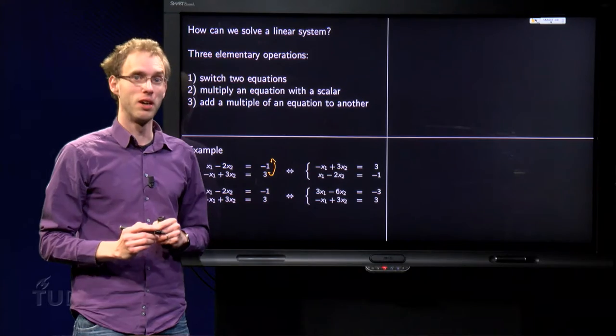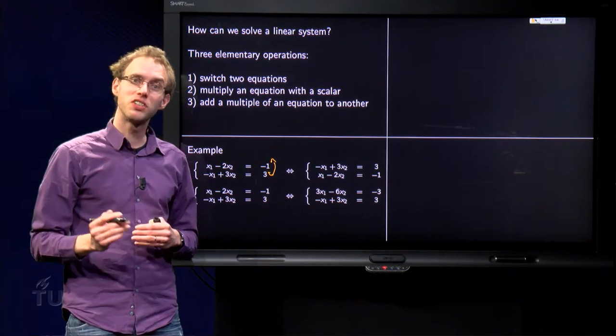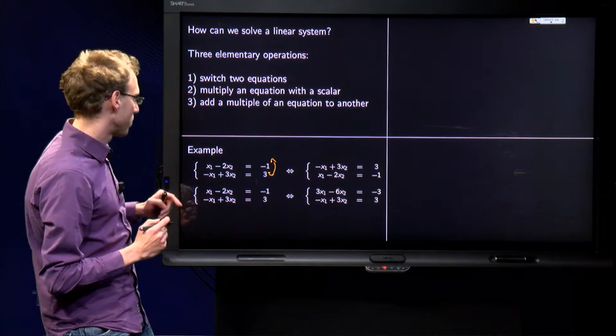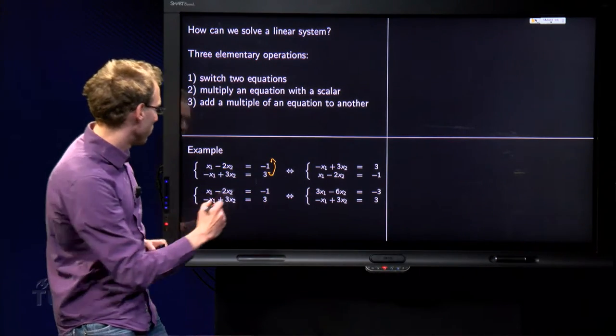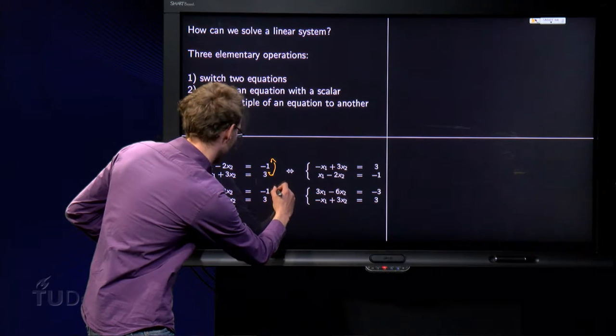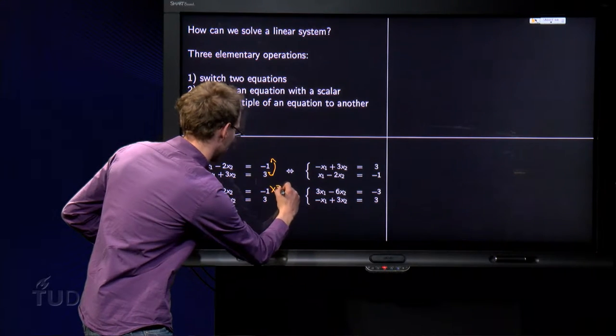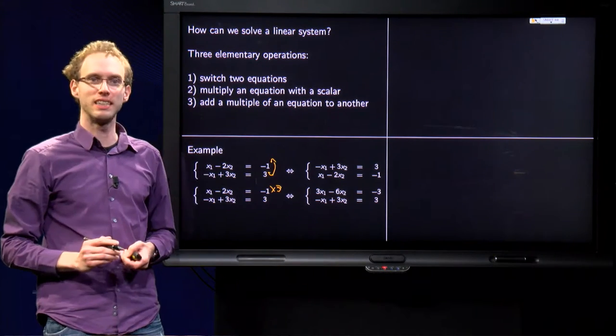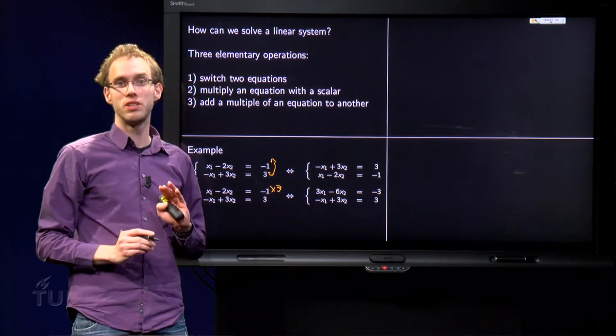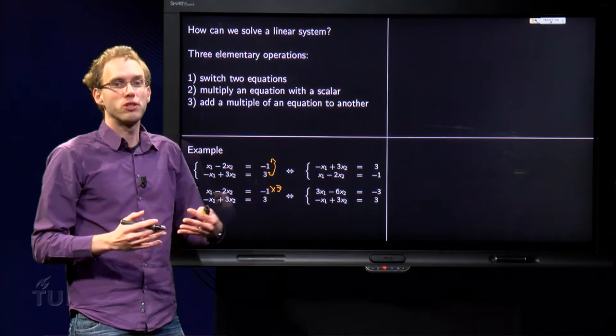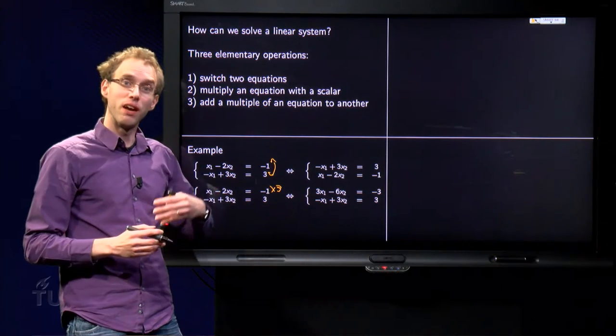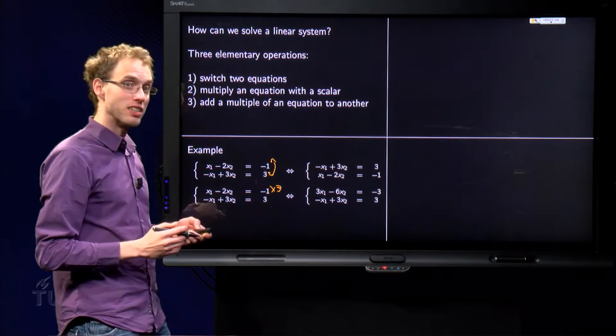Second operation: multiply one equation with a scalar and leave the other one untouched. In this case, we leave the second one untouched and multiply the first one with three. We get a new system which still has the same solution set. However, we haven't gotten very far; we haven't simplified the system.